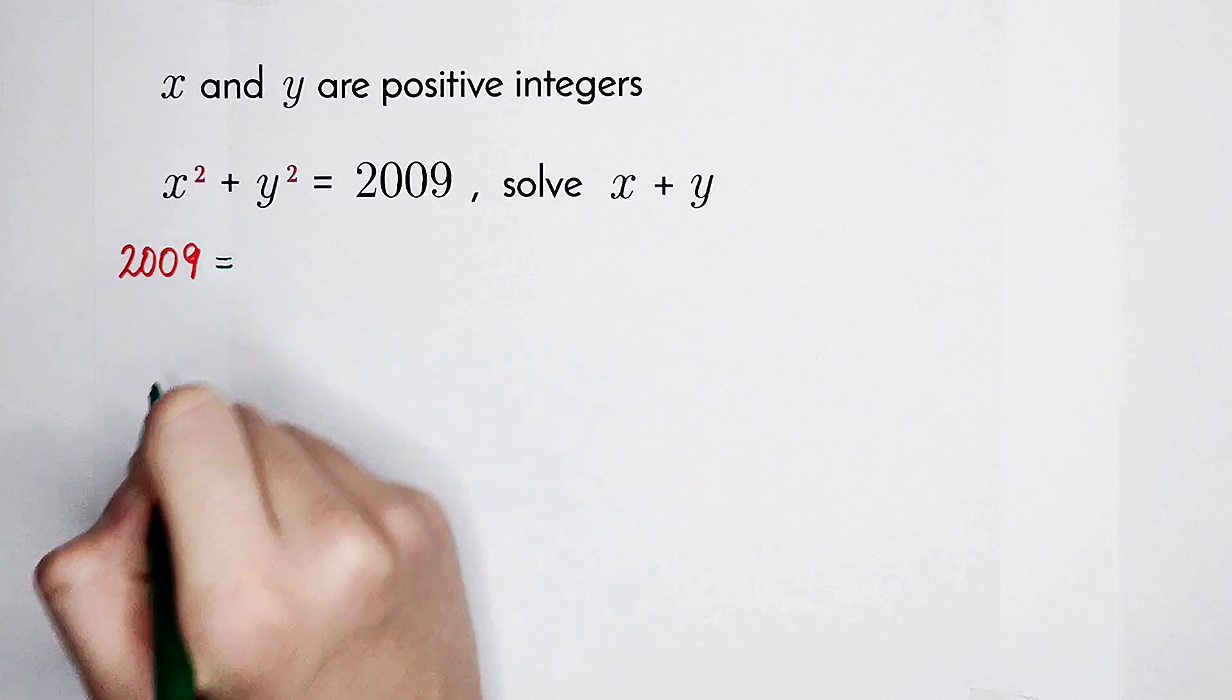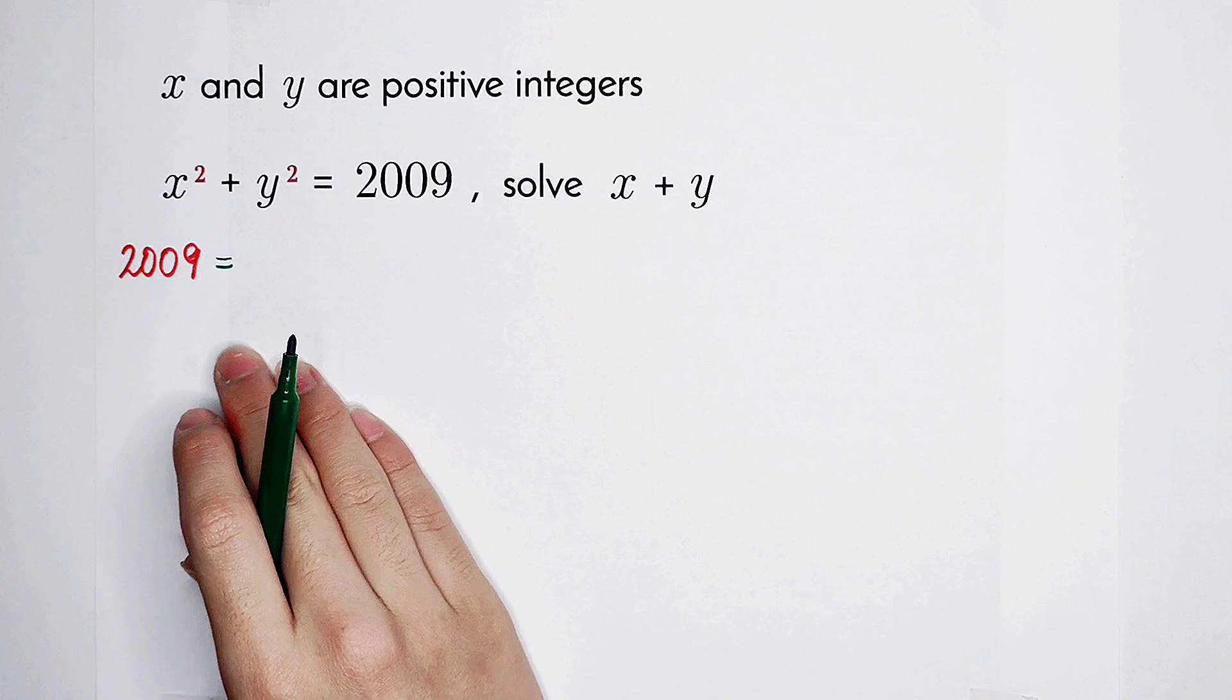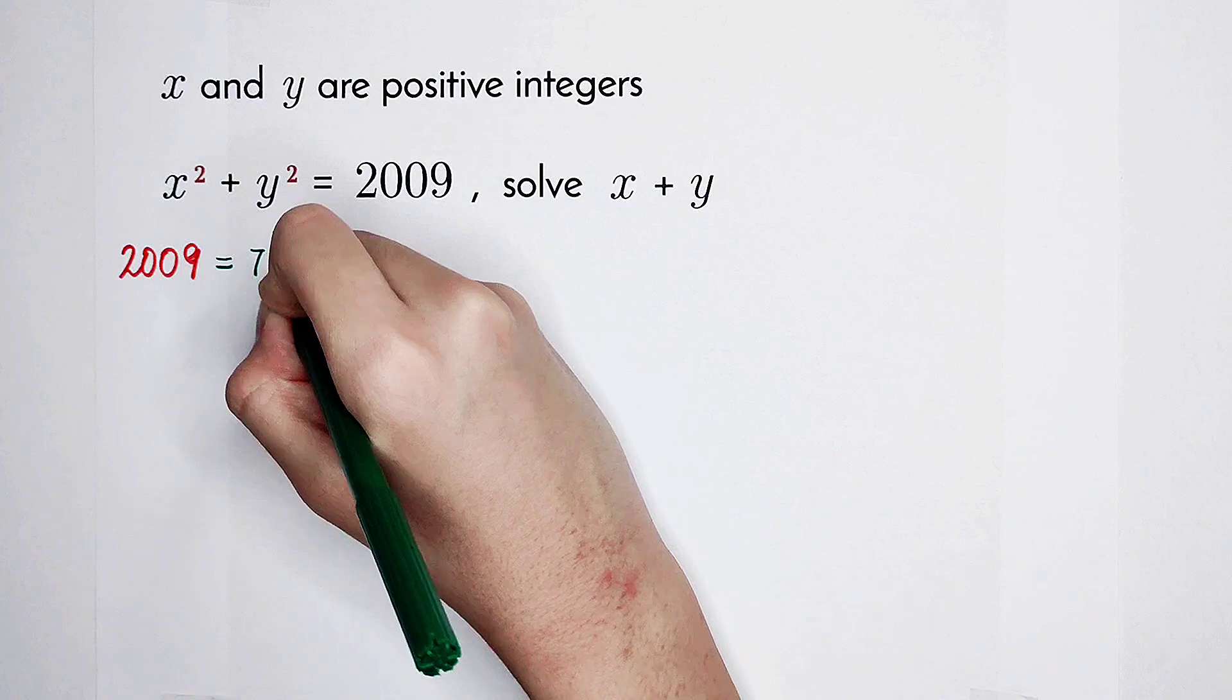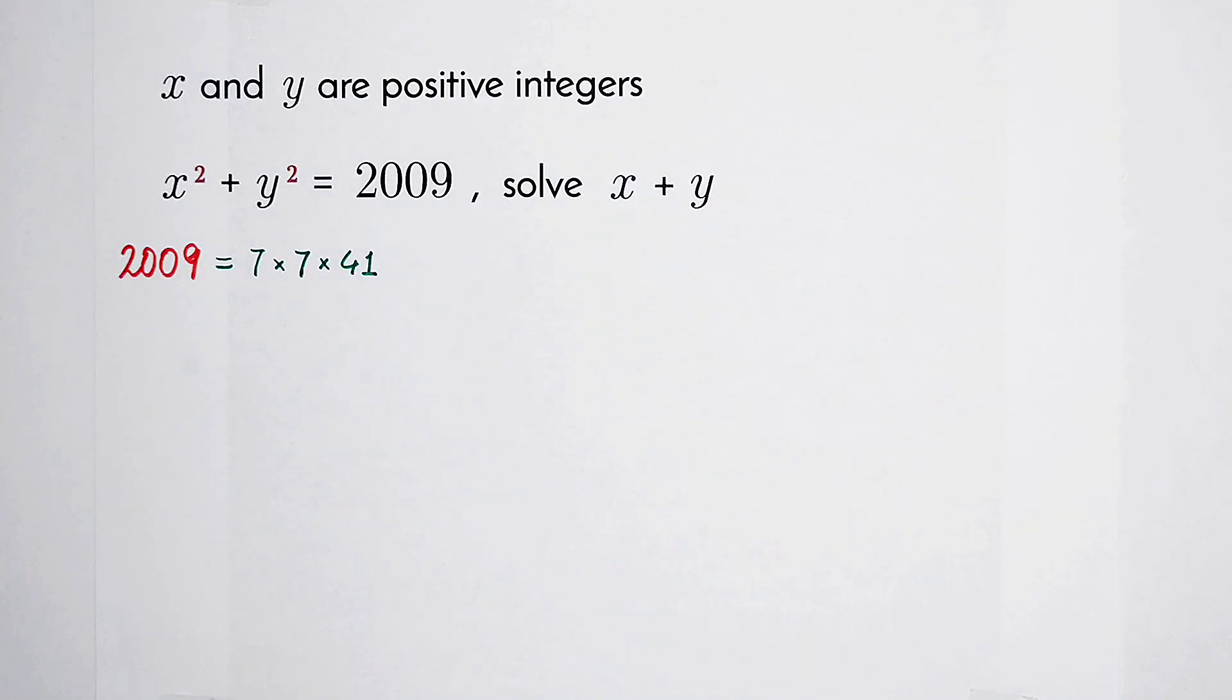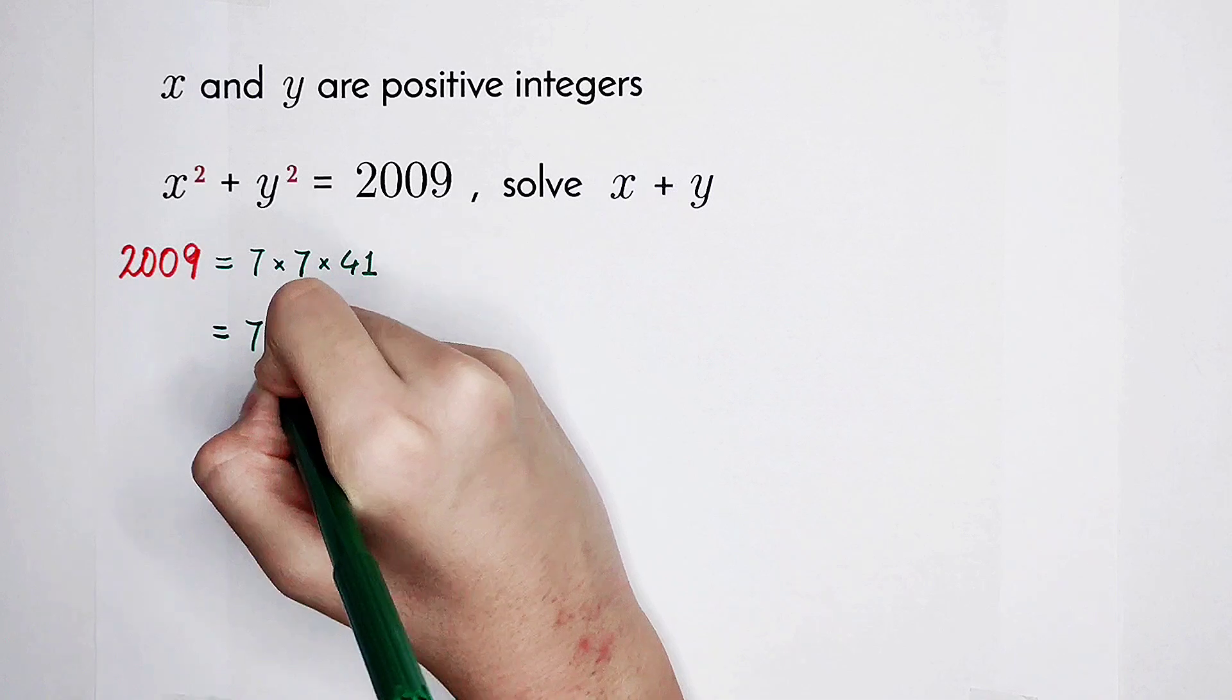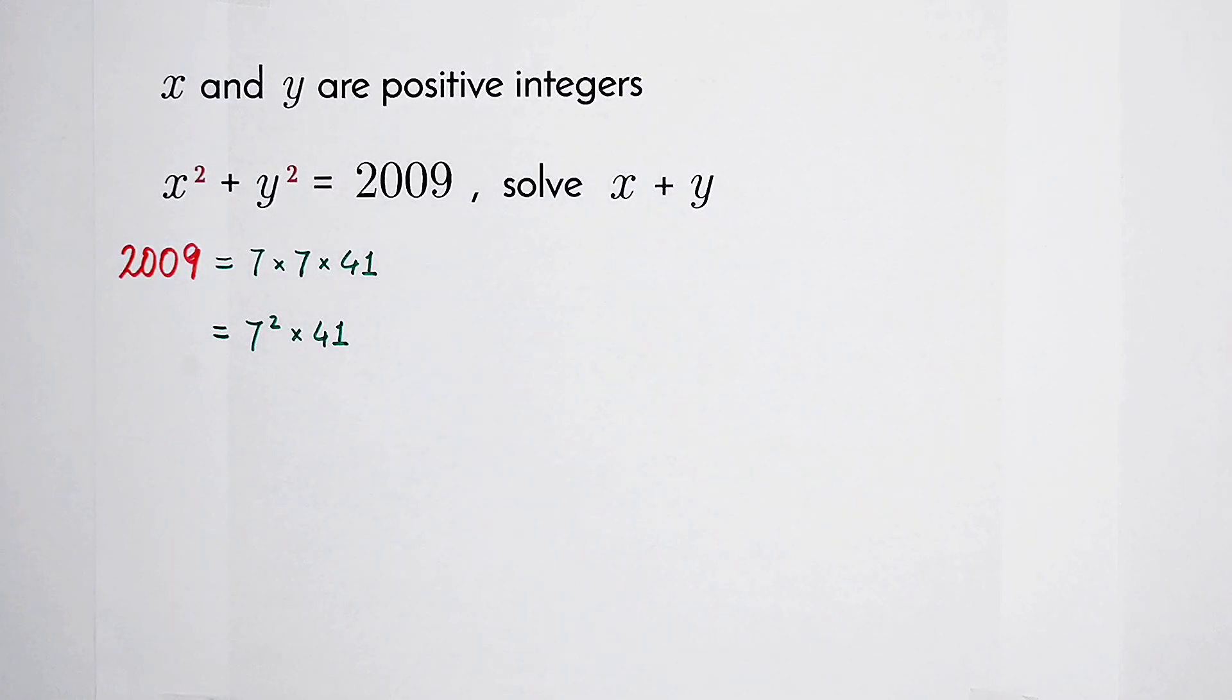Normally, we have to factorize its prime factors. And you can find out that it is equal to 7 times 7 times 41. It can be written as 7 squared. So it's 7 squared times 41. Good.